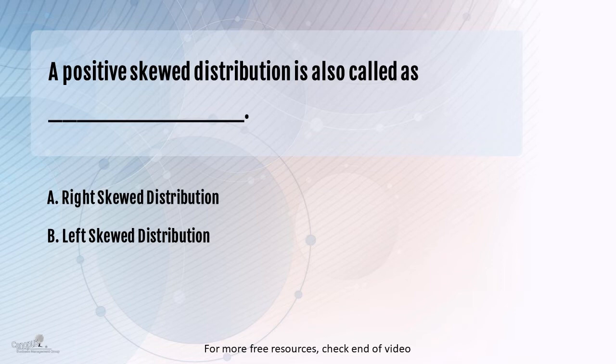On the other hand, if the tail, the side in which it is skewed, is on the left side, then we call that the left skewed distribution.